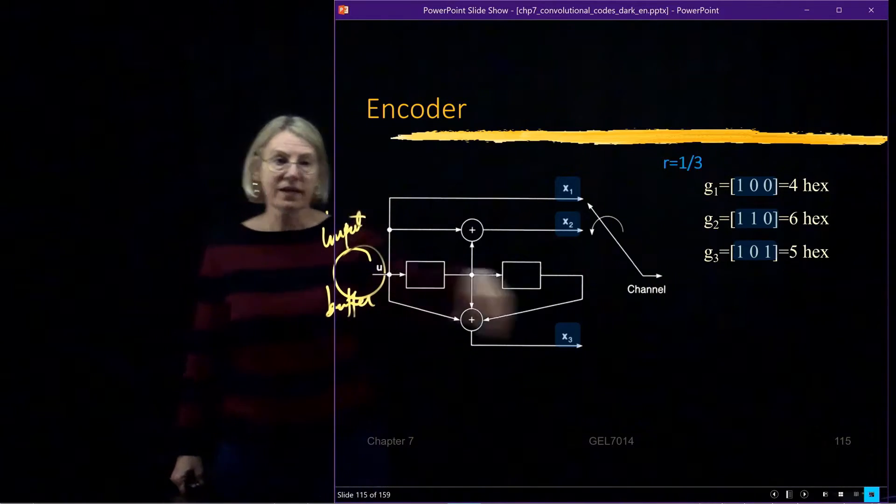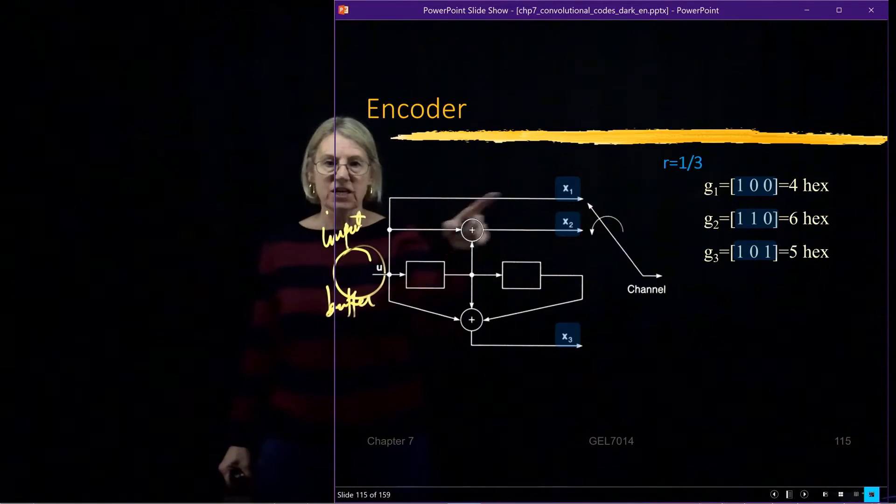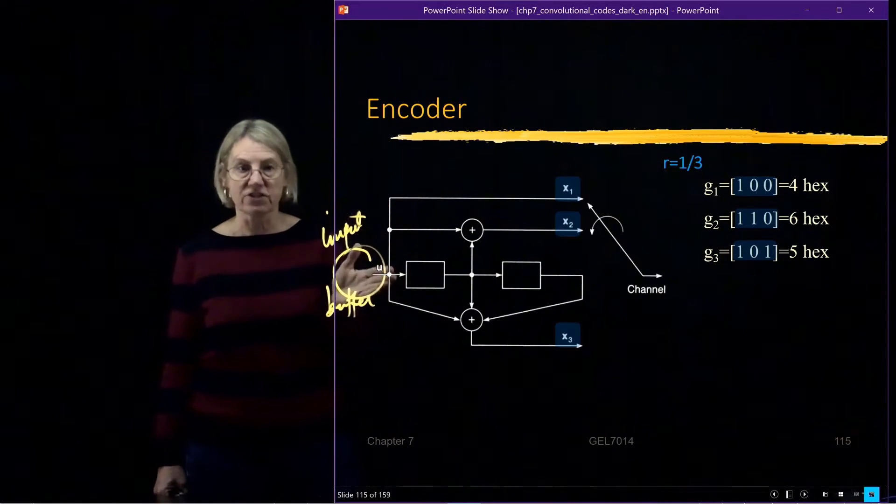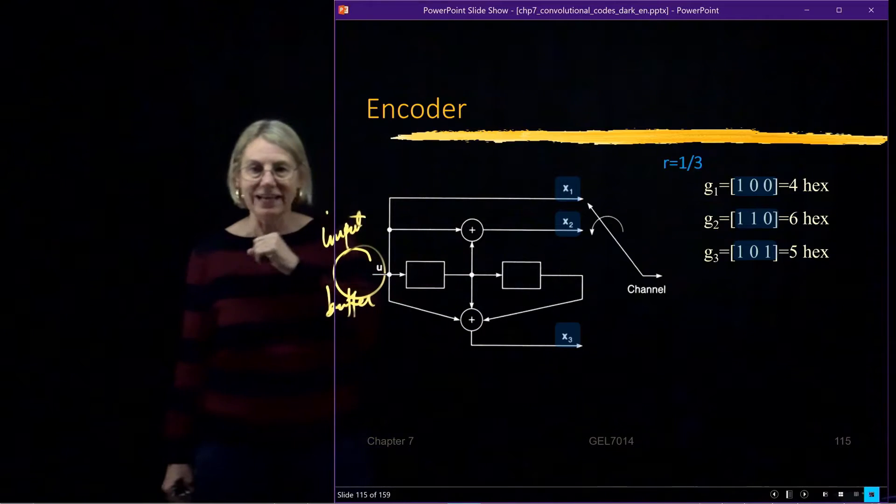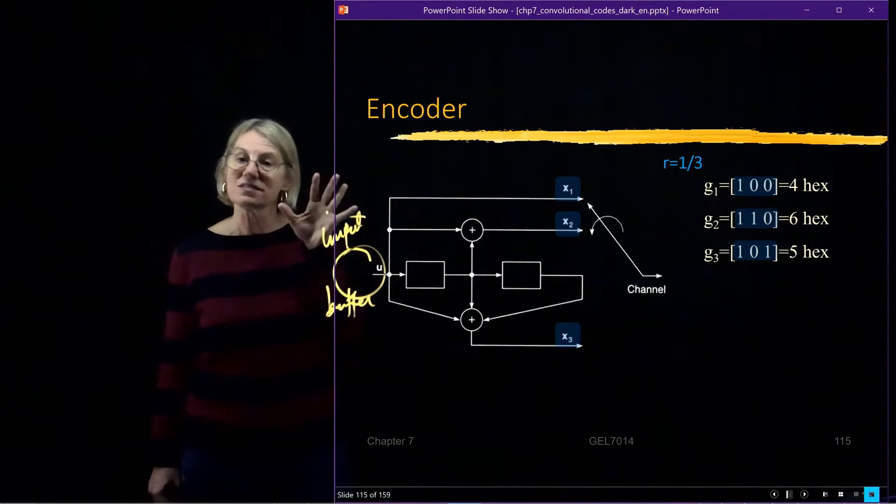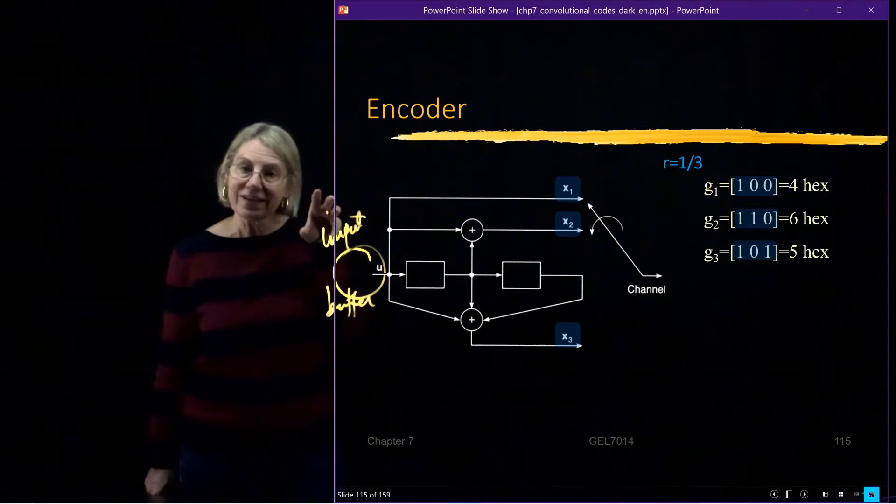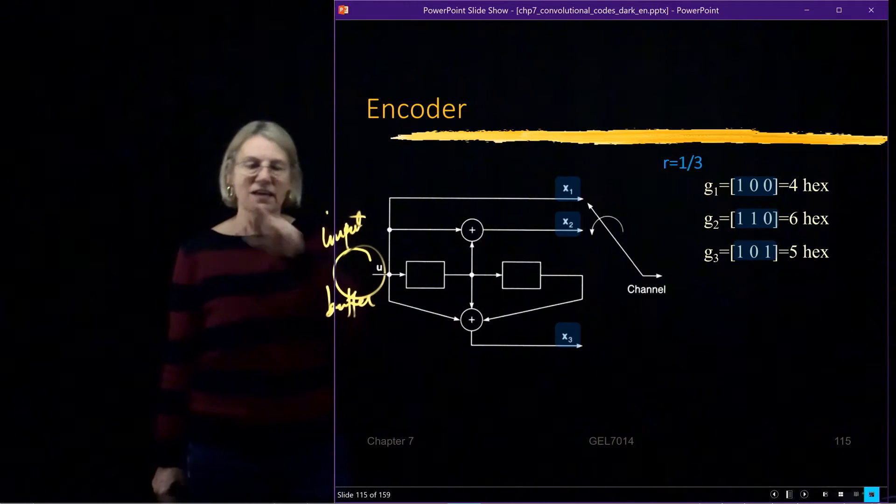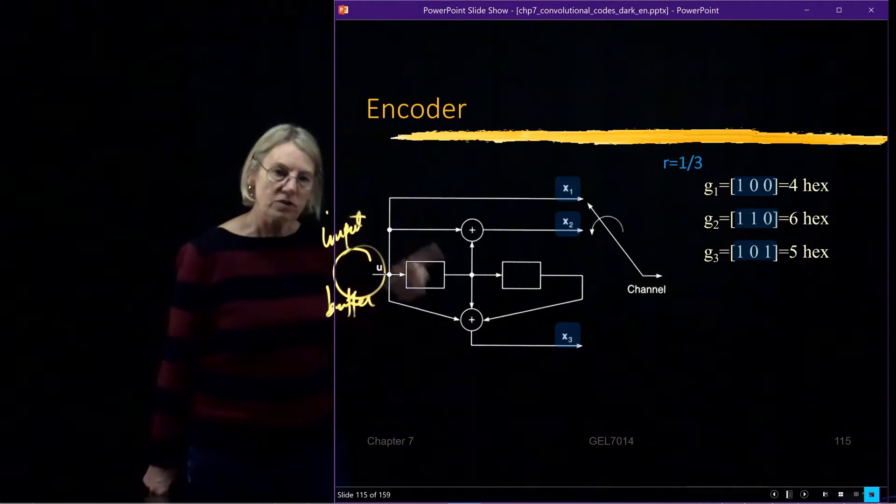Now, the first one here, G1, is just simply this interconnection, which means that it's just taking the input vector, not combining anything with it, which means this is a systematic code. I can read the data bit directly inside of the code. So as the code words come out, I'll know that the first bit just represents what was the input to the encoder.